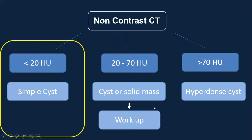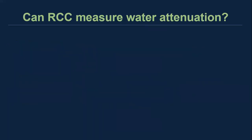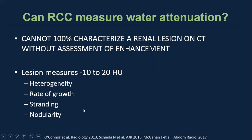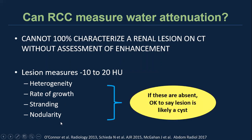Let's spend a few moments on these categories — probably the most common lesions we see in daily practice. Are we really sure we are dealing with a simple renal cyst if it measures less than 20 Hounsfield units on non-contrast CT? Can renal cell cancer measure water attenuation on non-contrast CT? Unfortunately, the answer is a big yes. We cannot 100% characterize a renal lesion on CT without assessing its enhancement. If we see a lesion measuring between minus 10 and 20 Hounsfield units, we must assess its heterogeneity, growth rate, and presence of stranding and nodularity. If all of these are absent, we can say it's most likely a renal cyst. In my own experience, heterogeneity proved to be the most helpful sign.